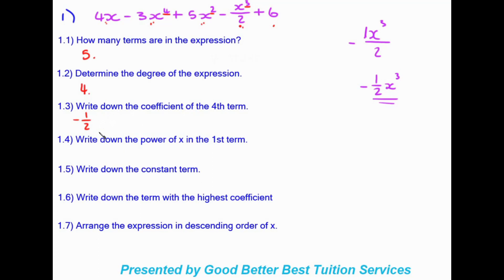Moving on — write down the power of x in the first term. Our first term is 4x. There is no power shown, and when there is no power given we know that is the power of 1. So the answer is just 1.